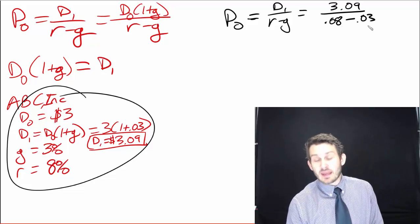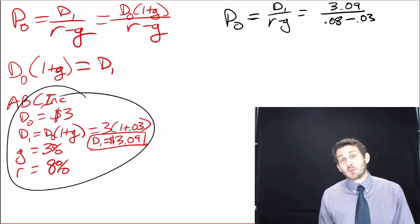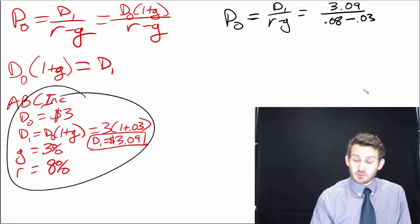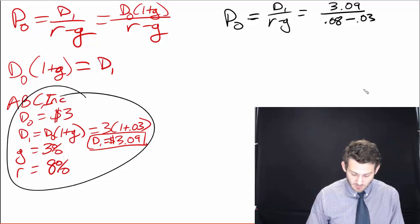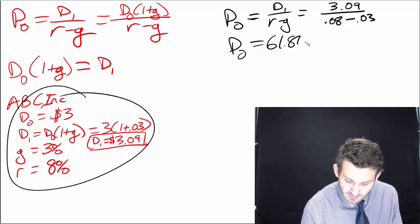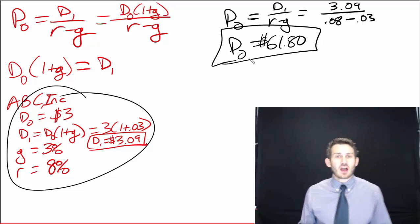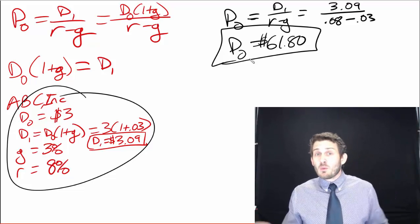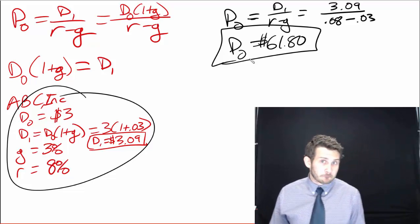And that is going to be divided by 0.08 minus 0.03. Now keep in mind what we see here is that the interest rate and the growth rate, those are all in decimal format. 8% is 0.08, 3% is 0.03. So this is going to be 3.09 divided by 0.05, which tells us our price today is $61.80. So if this stock is currently selling for $67, should we buy it? No. We think it's actually worth less than the price that it's trading for on the market.